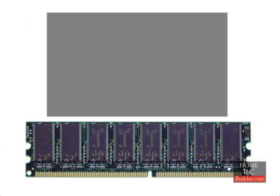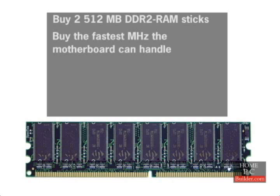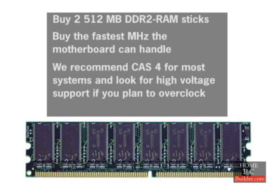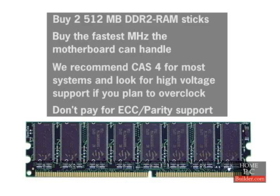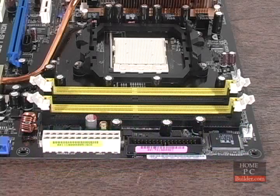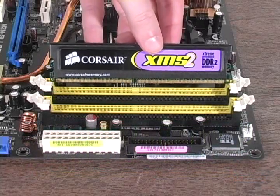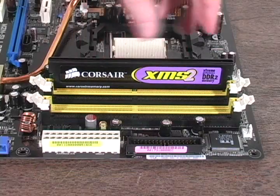When you purchase your computer's memory, look for two 512 megabyte DDR2 RAM sticks in a package to enable dual channel on the motherboard. Get the fastest megahertz memory the motherboard you choose can handle, buy CAS4 RAM, look for higher voltage support if you plan to overclock, and don't spend money on ECC or parity support. In the installation lessons, we'll go over how to install the memory sticks onto the motherboard.